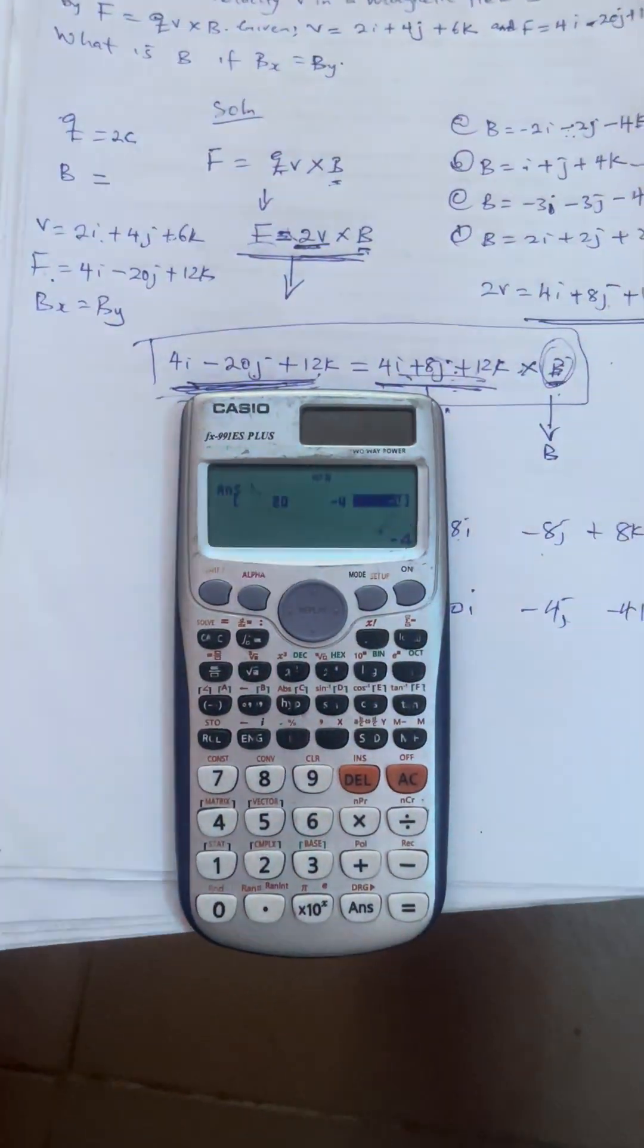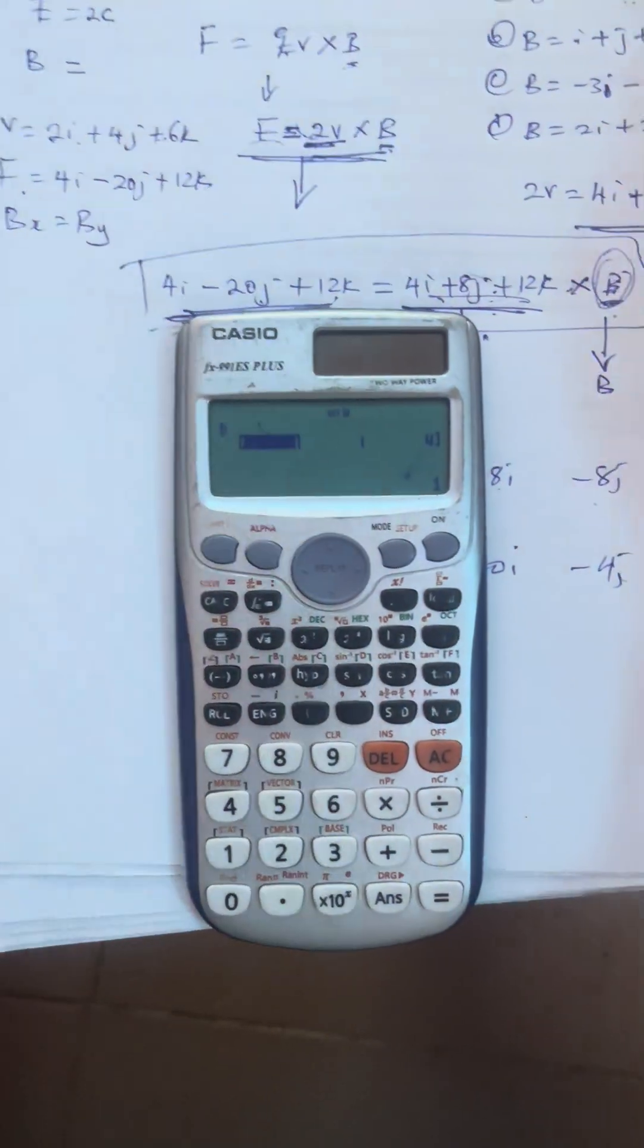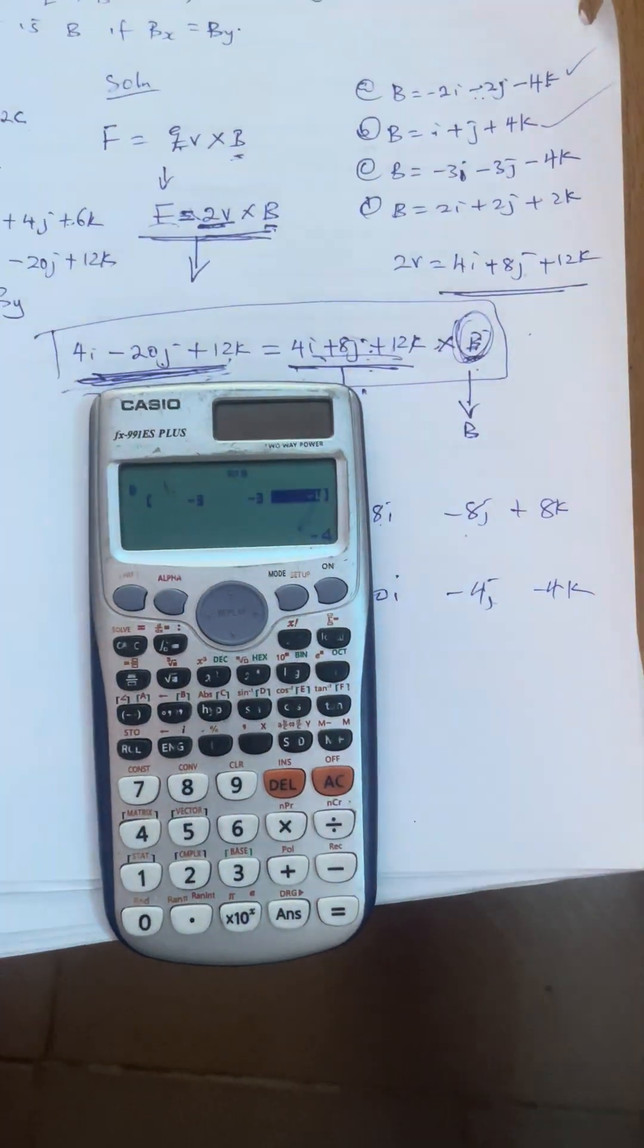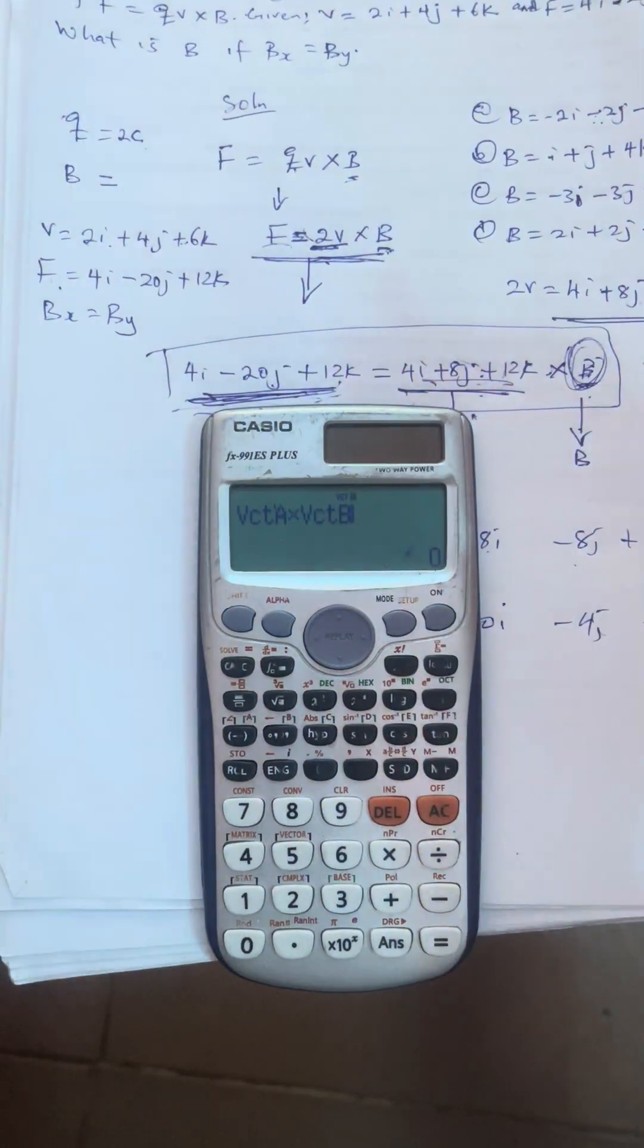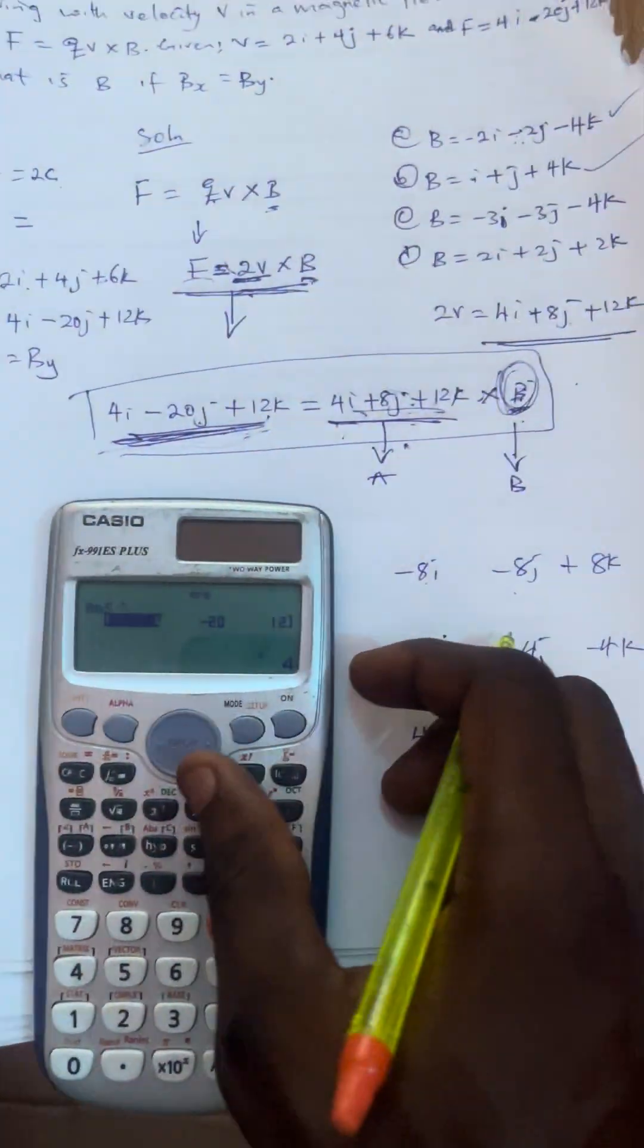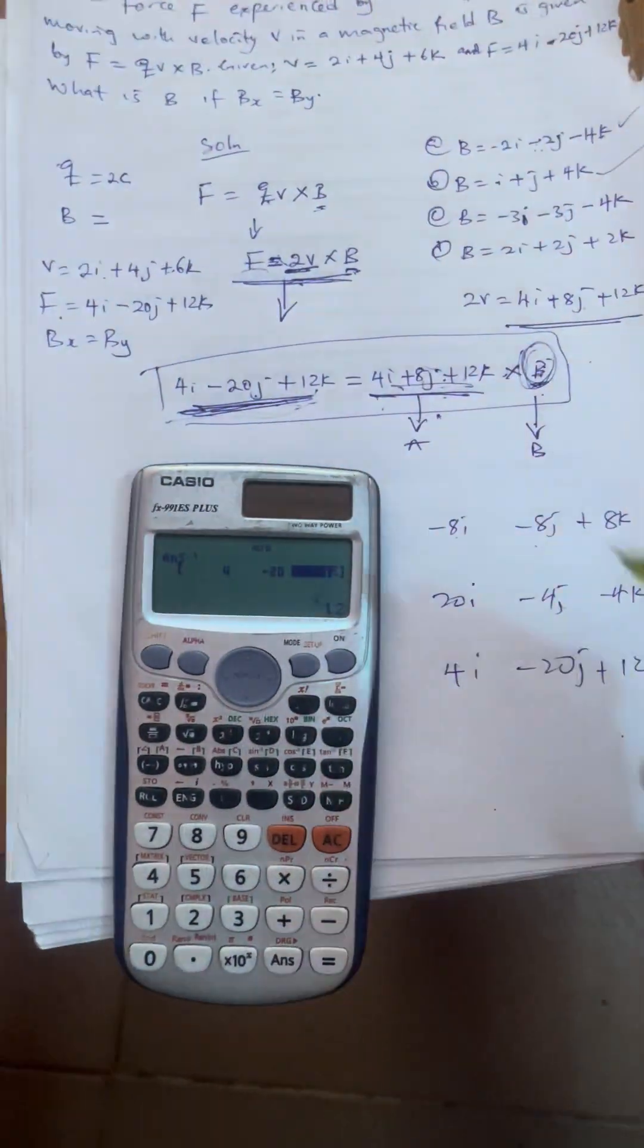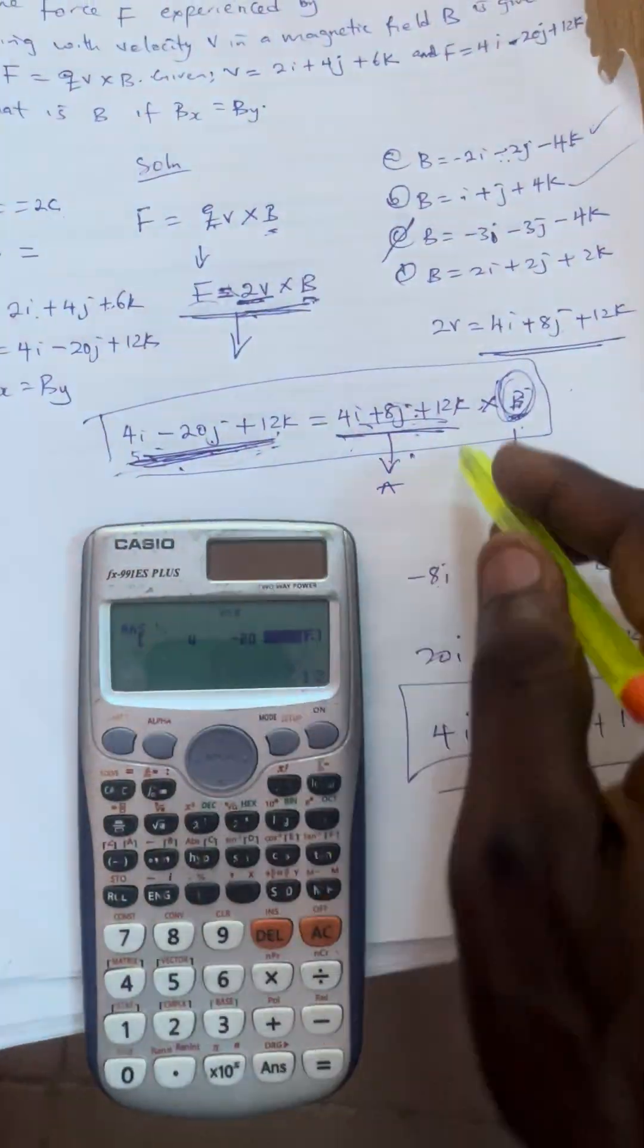Let's go to option C. I believe option C should be the final answer. Press your shift 5 again, go to data, go to vector B. Let us change vector B. We are changing this to option C. Option C says minus 3 equals, then minus 3 equals, then minus 4 equals. That's option C. We already substituted our vector B for that. Press AC. Press backward direction, your question is already there, which is 2V cross B. Press equals. You observe that you have the answer here to be 4. Press your button here, you come to this, minus 20. Then come to this, you have it to be 12. Can you see it is 4I minus 20J plus 12K. And that is the answer that is equal to 4I minus 20J plus 12K. So the only option that gave us this is option C.